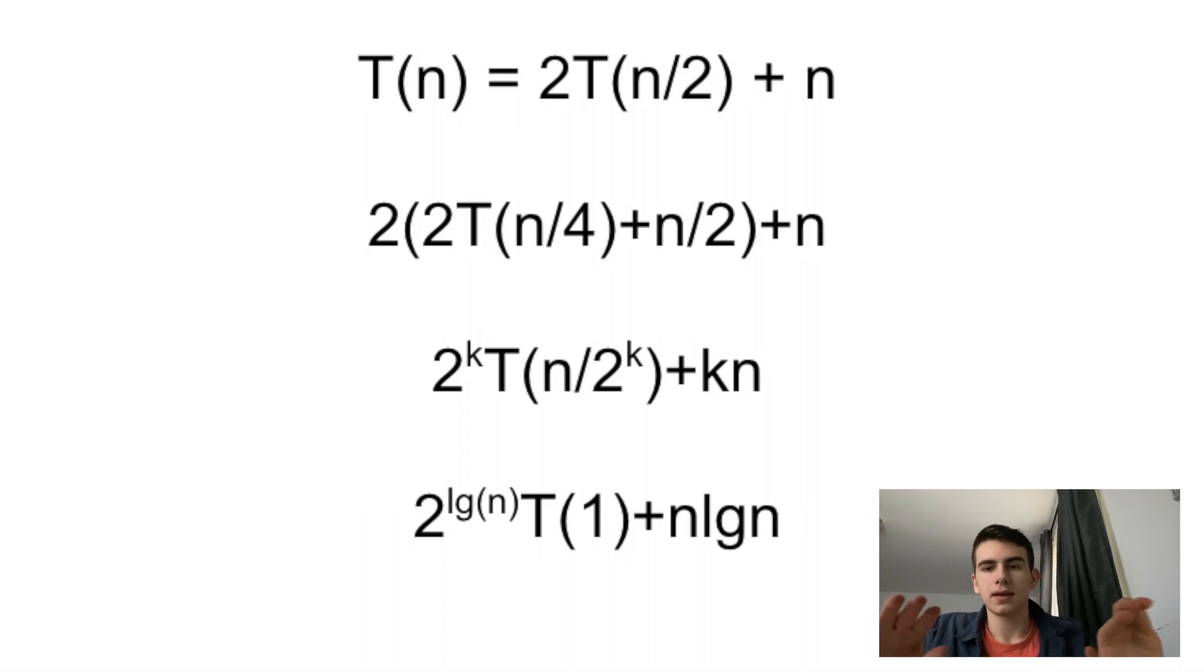So what we do in the next step is we say, okay, I'm going to break this down k times. What is my recurrence relation going to look like if I introduce this variable k? And what you get is evident here, 2^k * T(n/2^k) + kn. And I hope that makes sense after the explanation that I just gave.